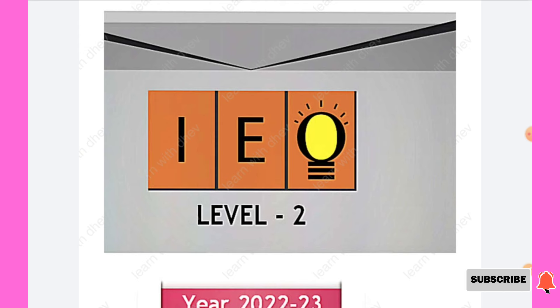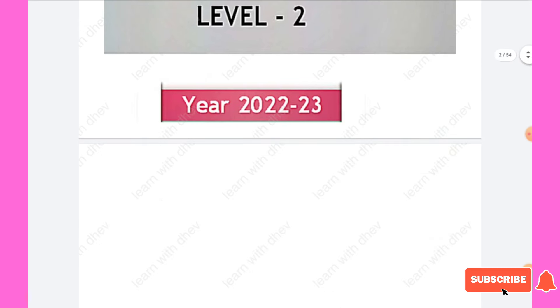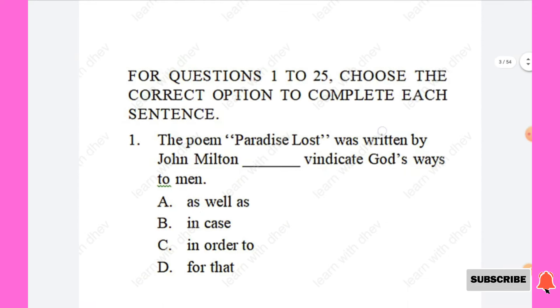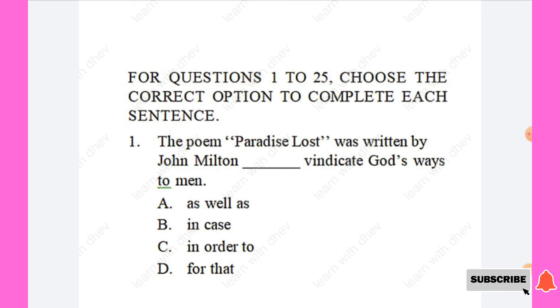Let's move into the video. The first section is Word and Structure Knowledge. In this paper you will have a total of 50 questions with a time duration of 1 hour. The last section is the Achiever Section, which has five questions each carrying three marks. The questions in the Achiever Section require a higher order thinking skill.